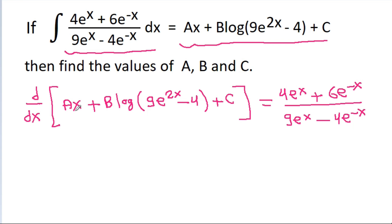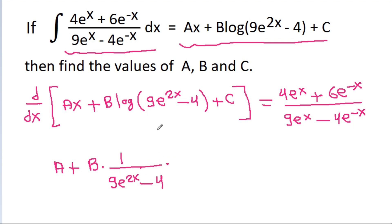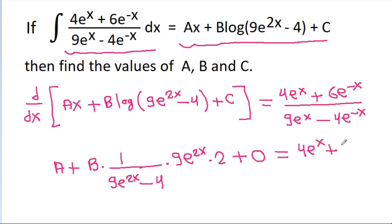The differentiation of ax will be a, plus differentiation of b·log(9e^(2x) minus 4): b is constant, so we get b times 1/(9e^(2x) minus 4) times the differentiation of (9e^(2x) minus 4), which is 9·e^(2x) times 2. Since c is constant, differentiation of c is 0. This equals (4e^x plus 6e^(−x)) divided by (9e^x minus 4e^(−x)).